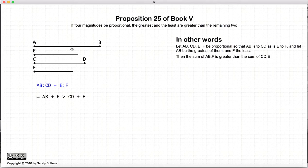If we have that the ratio of AB to CD is equal to the ratio of E to F, then this proposition states that the sum of the largest and the smallest, AB and F, would be larger than the sum of E and CD.